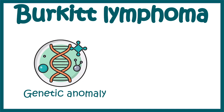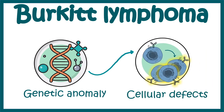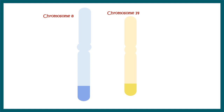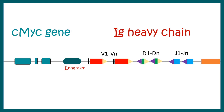Now let's look at the genetic anomaly and how it is associated with the cellular defects in Burkitt lymphoma. The genetic anomaly involves a translocation event between chromosome 8 and chromosome 14. This translocation leads to the movement of the CMYC gene to the IgG heavy chain locus. The IgG heavy chain is highly expressed in B cells because B cells express Ig receptors on their surface, which is why the Ig enhancer is highly active in B cells.